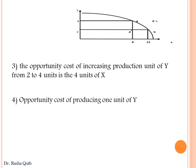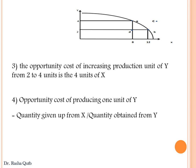The opportunity cost of producing just 1 unit of Y is calculated using the formula: quantity given up from X over quantity obtained from Y. Moving from B to A, we give up 4 units of X to increase production of Y by 2 units. So the opportunity cost of producing 1 unit of Y equals 2 units of X.